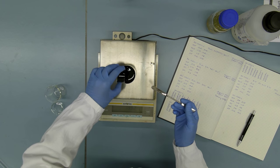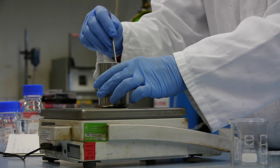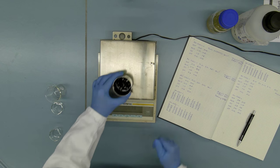The graphite anode is subsequently prepared from a comparable mixture. The scientist first blends the ingredients roughly and feeds them into a mixer.